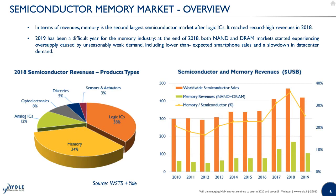Starting with an overview of the semiconductor memory market — memory is really an important market segment. In 2018, memory accounted for approximately 34 percent of the overall semiconductor market and was actually the second largest segment after logic integrated circuits. 2019 was a difficult year for the memory industry. After a record high in 2018, we entered a condition of oversupply, which was responsible for price decline and overall revenue decline. In 2019, the memory business dropped by more than 34 percent, but it remains a critical segment.